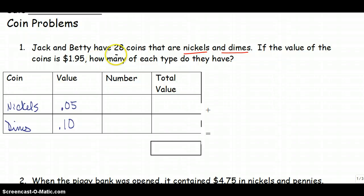Do we know how many of each one of these we have? Well, no, all I know is I have 28 coins altogether. So I'm going to say that I have n nickels. If I have n nickels, how many dimes do I have? I have 28 coins altogether. If I take out all of the nickels, I'm only going to be left with the dimes.